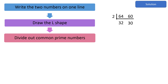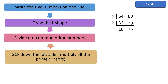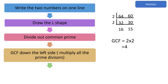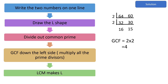Continue dividing the numbers by their common prime number until their only common factor is 1. To compute for the GCF, multiply all the prime divisors located on the left side. To compute for the LCM, multiply all the divisors located on the left side and all the numbers at the bottom.